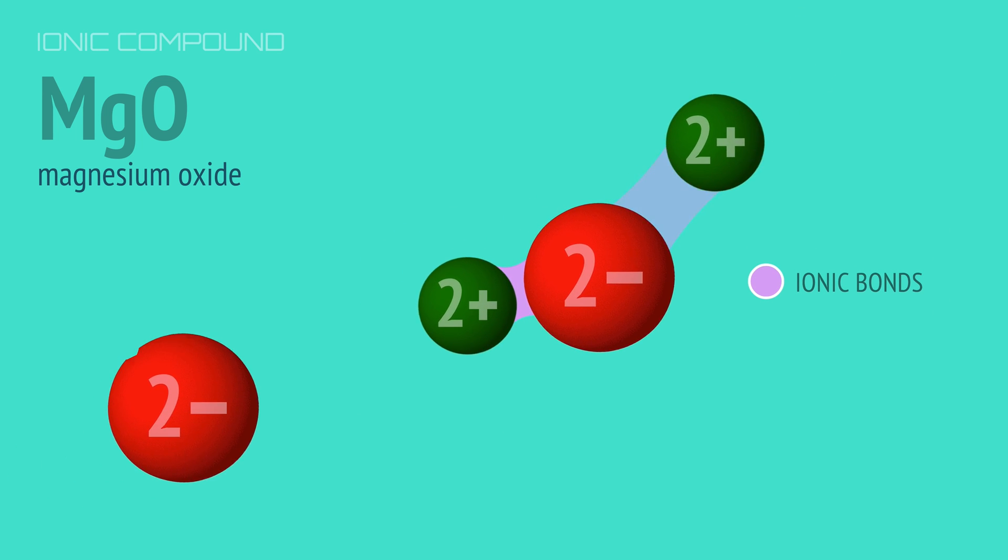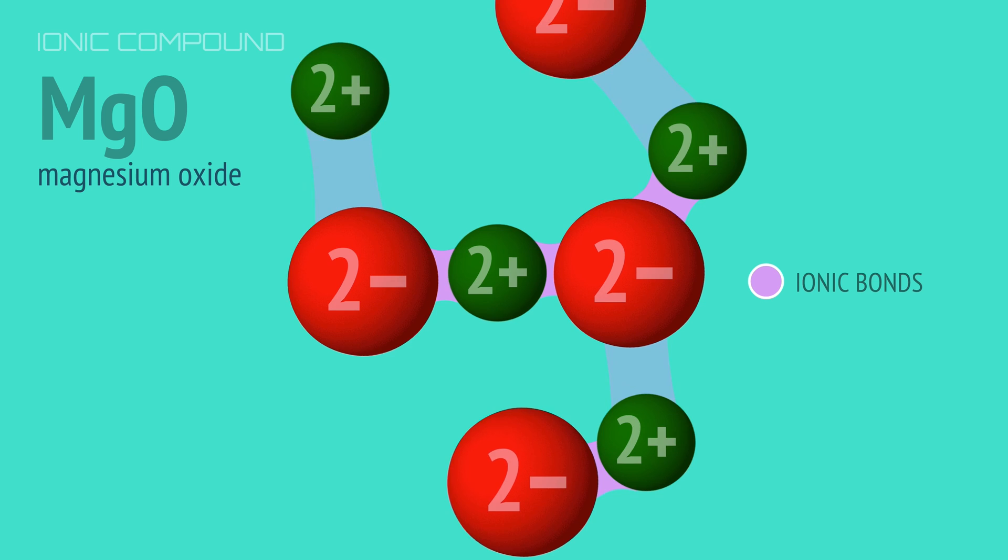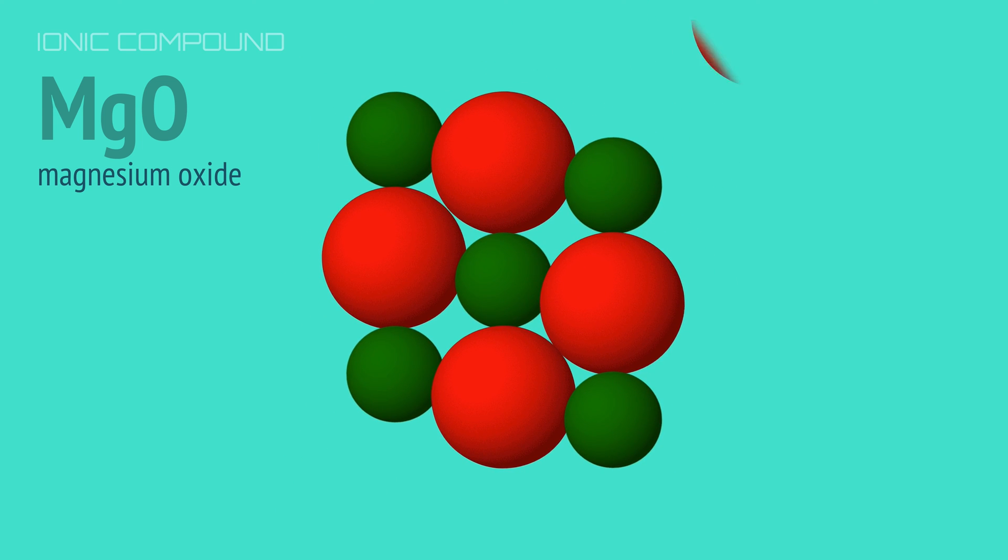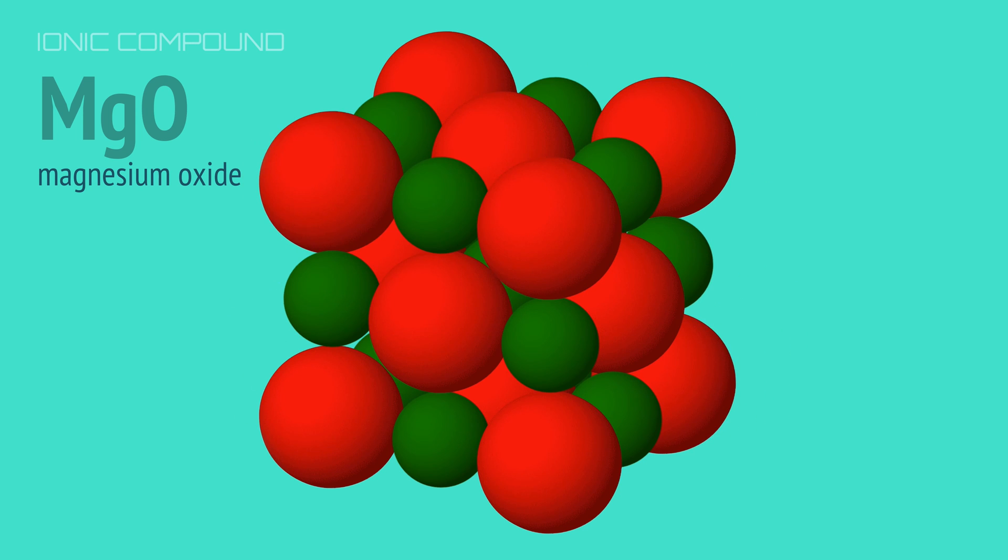And these ions attract and bond with other ions to form an extremely strong lattice with a one-to-one ratio of magnesium ions to oxide ions.